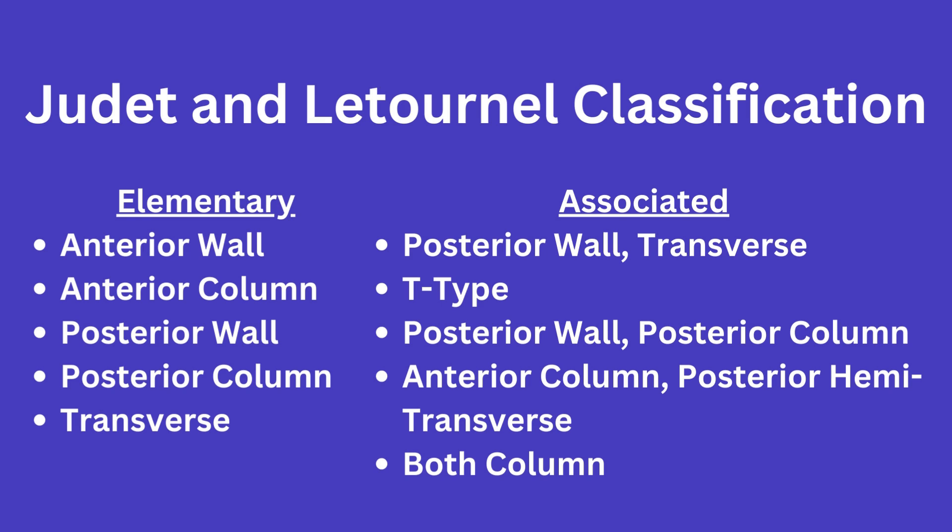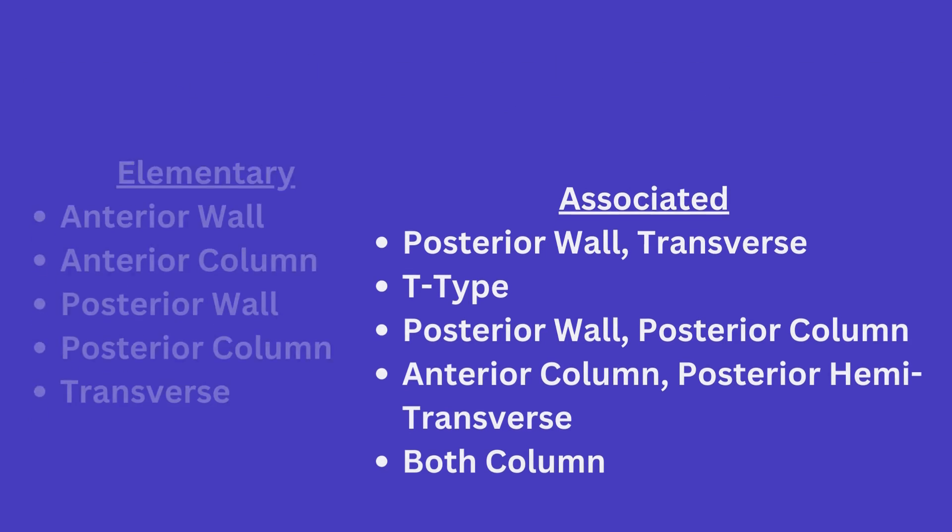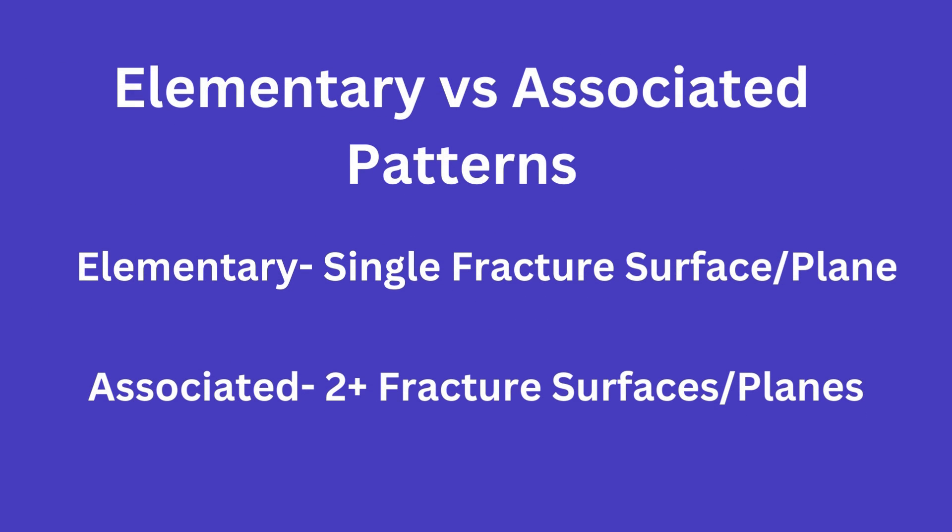To start, here are the 10 types listed. There are 5 elementary and 5 associated fracture patterns. An elementary acetabular fracture refers to fractures that have a single fracture surface or plane, whereas associated acetabular fractures have two or more fracture surfaces or planes. You will see this drawn out as we look at the 5 types in each.